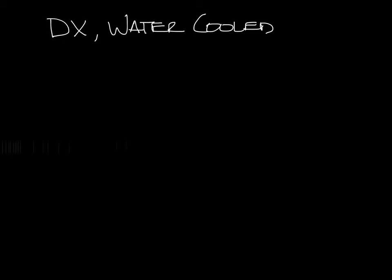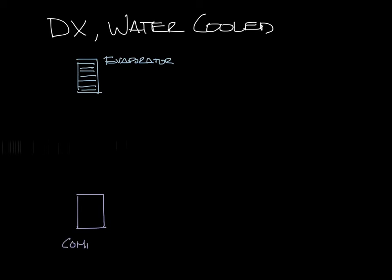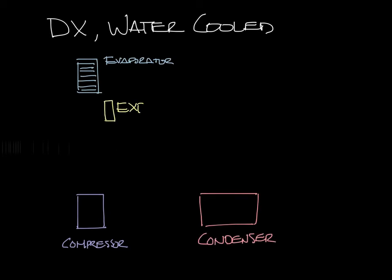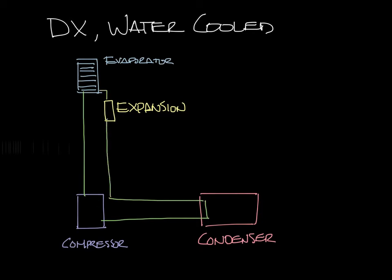So let's draw the components. We won't be as detailed as last time, but let's draw in our evaporator, the compressor, over here the condenser, and then we'll also need an expansion valve. Just like our DX air-cooled system, the refrigerant flows from the evaporator to the compressor to the condenser through the expansion valve and back into the evaporator.